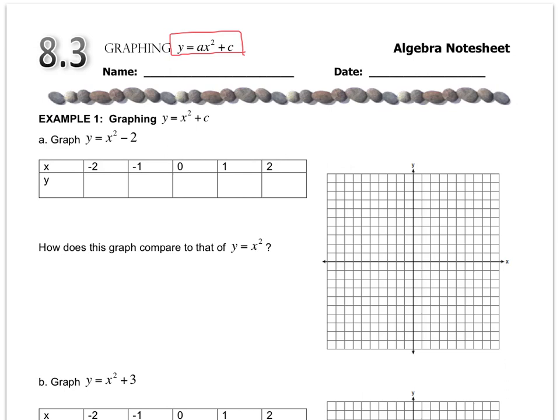So let's plug in negative 2. When I plug in negative 2, that's negative 2 squared, which is 4. 4 minus 2 is 2. Negative 1 squared is 1. 1 minus 2 is negative 1.